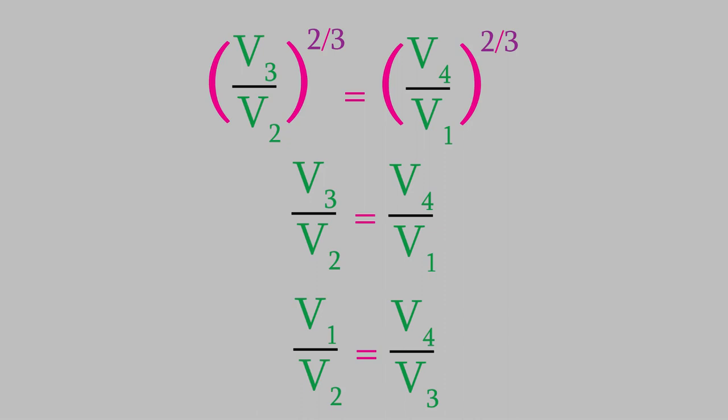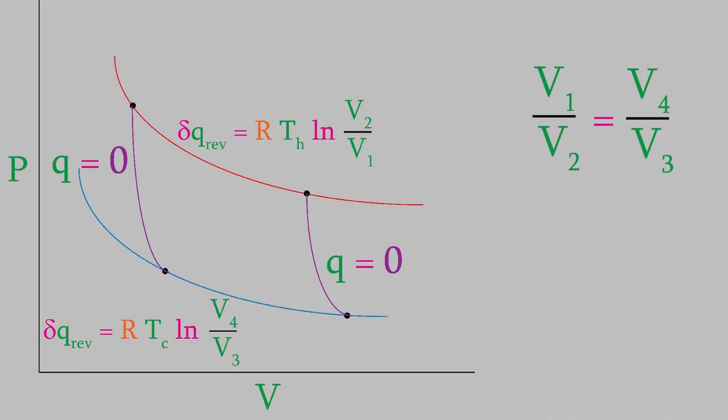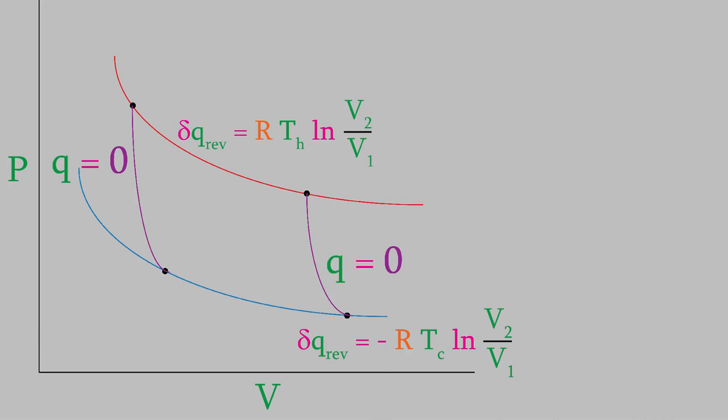Now, why did we do all that? Well, let's go back to the values of the heat that we found for each step in the Carnot cycle. Take a look at step three. The expression there has V4 over V3 in it, and we just saw that that is equal to V1 over V2. If we substitute that in, and then flip the fraction, we have to change the sign on the right side of the equation, but it means that the logarithm term is now the same as the one in step one. Now, we can add the heat for all four of the steps, and when we do, we find out that the overall heat is a fairly simple expression. The heat exchange during the Carnot cycle is R times the difference in heat between the two reservoirs multiplied by the logarithm of V2 over V1.